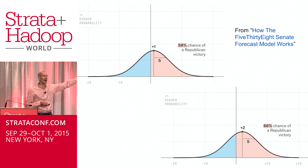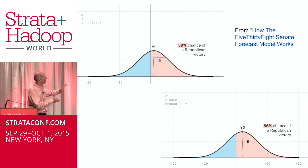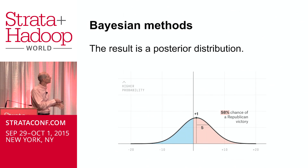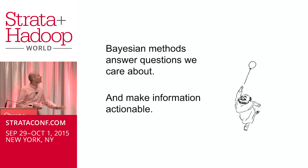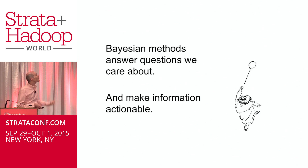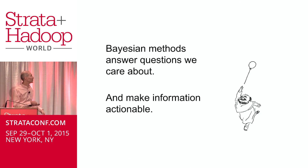Furthermore, Bayesian methods tell you how to do an update when new data come in. You have a prior based on previous polls, you do an update based on the latest poll, and that posterior is what you should believe given all the data you've seen. This is from the FiveThirtyEight explanation of how they did their Senate forecasts — which were pretty good. Bayesian methods answer the questions we actually care about and make your data actionable.